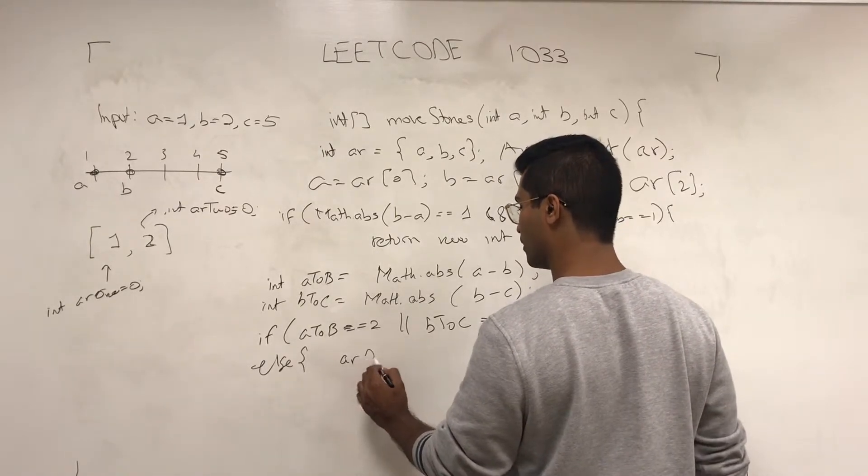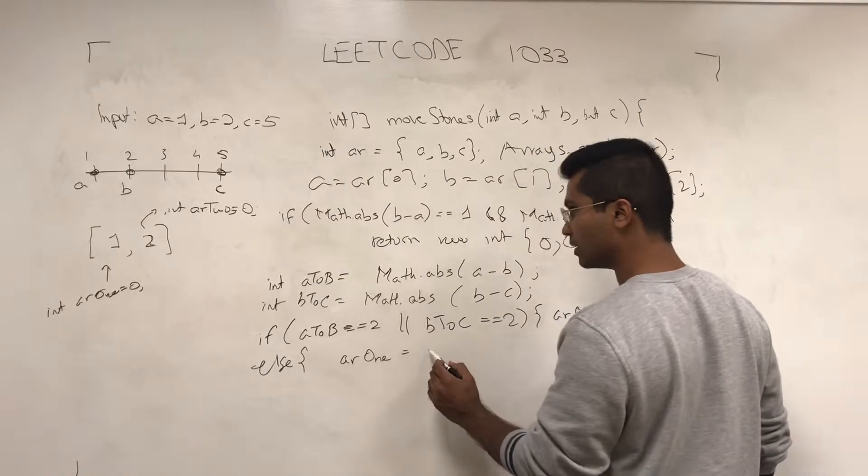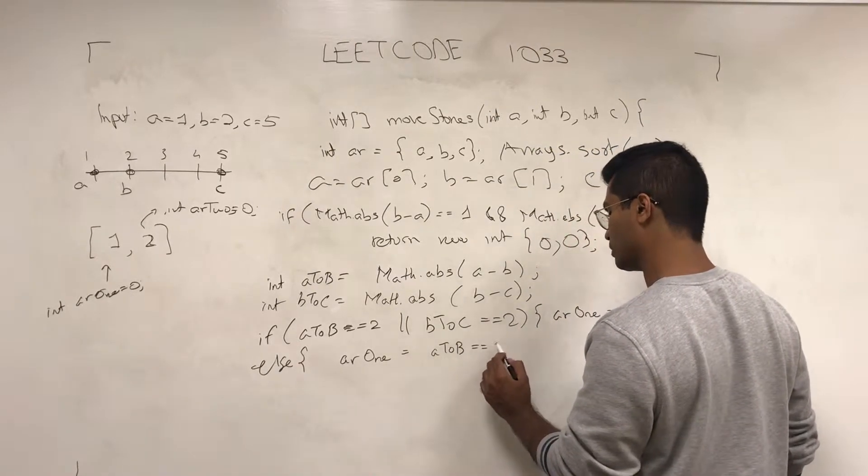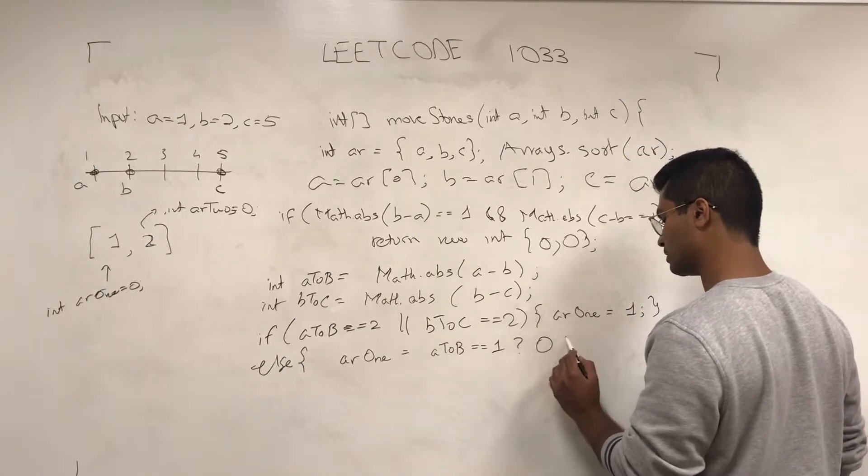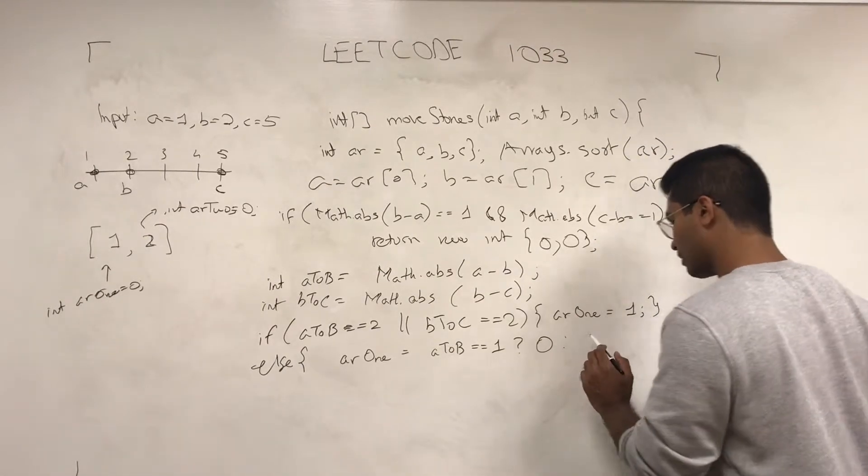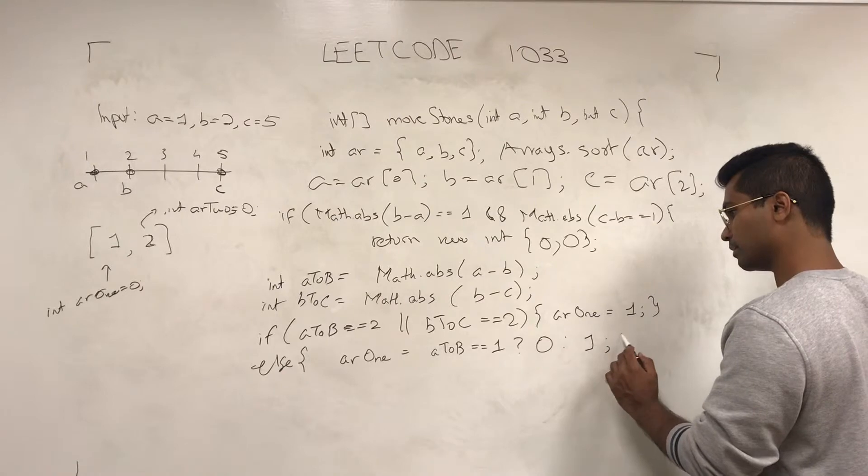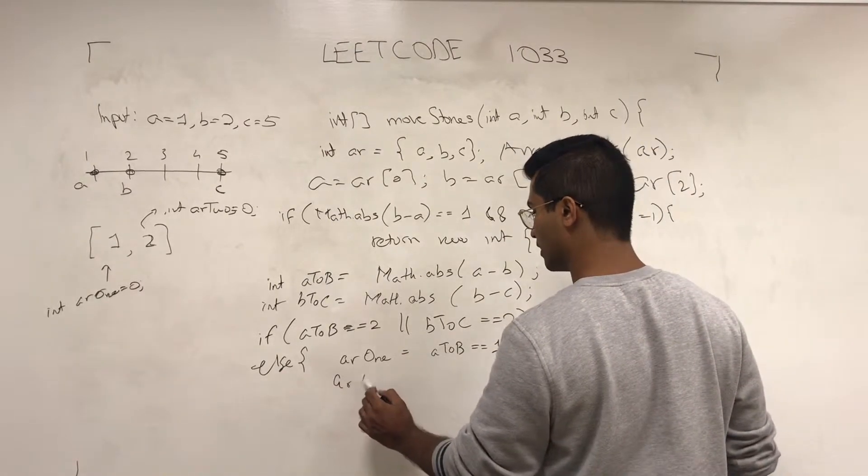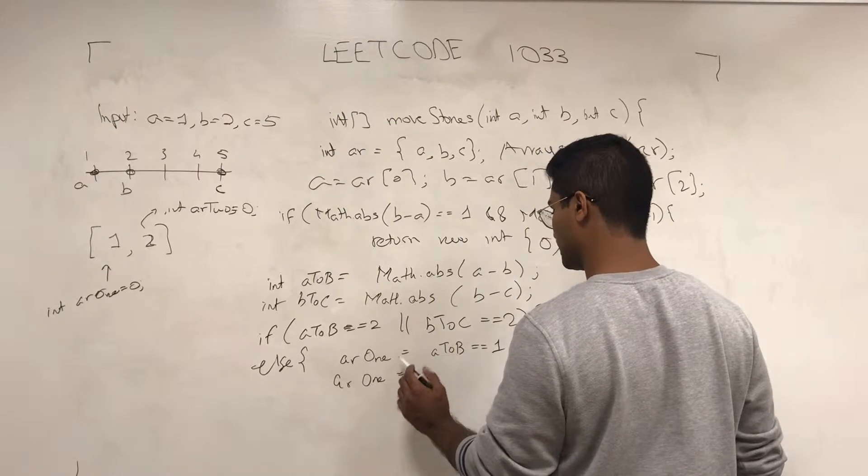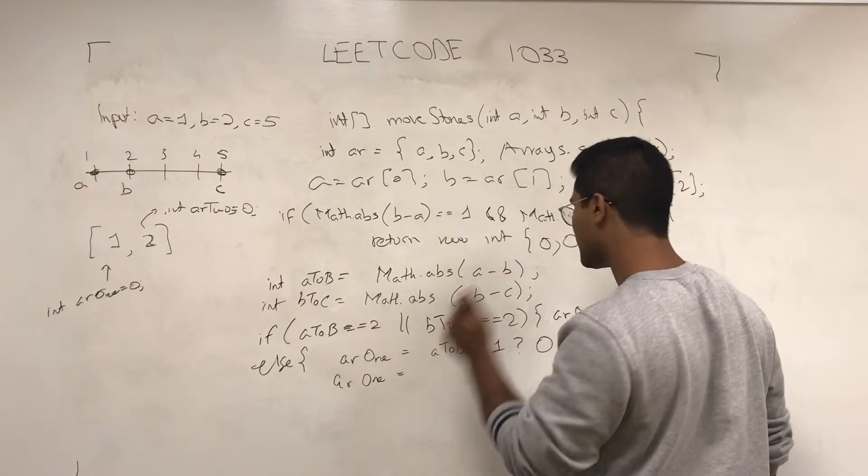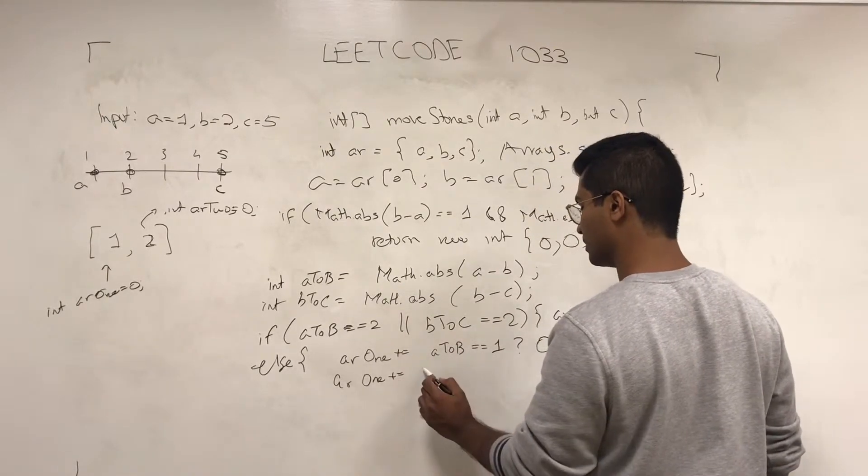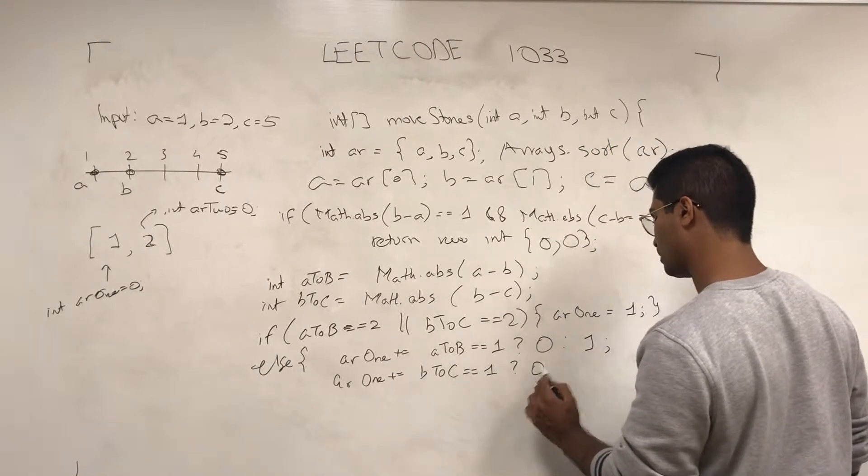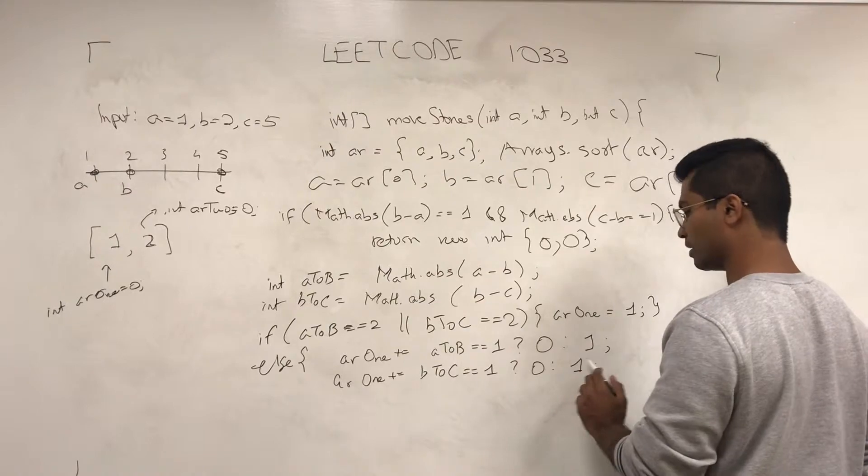So if AR1 is going to be 1, then AR1, if AtoB is equal to 1, then set this to 0, else you make this 1, increment it by 1. And then this guy is AR1 is incremented, BtoC, is it 1, add 1, else add 0, else add 1.